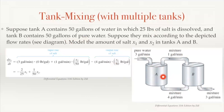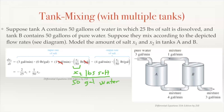The input rate of salt: we have three gallons a minute in with zero pounds of salt, plus one gallon a minute in which has x2 over 50 pounds per gallon of salt. You can do a dimensional analysis — gallons over gallons cancels out, so the units are pounds per minute of salt in. Tank B has x2 pounds of salt in a constant 50 gallons of water. That's constant because we have four gallons a minute in and one plus three is four gallons a minute out, so it stays constant at the initial 50 gallons.